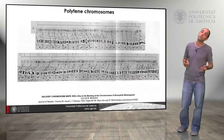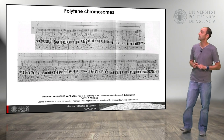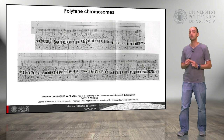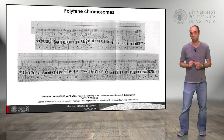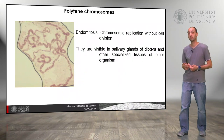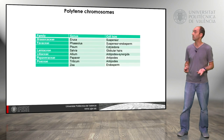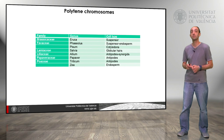Here we can see a map of the Drosophila chromosome made in 1935, showing the different polytene chromosome regions. We can even use that map to locate genes that control certain traits of Drosophila. Polytene chromosomes are visible in the salivary glands of dipterans, but also in some other organisms, such as the suspensor cells of some plants, the antipodes, and the globular hairs of some plants.